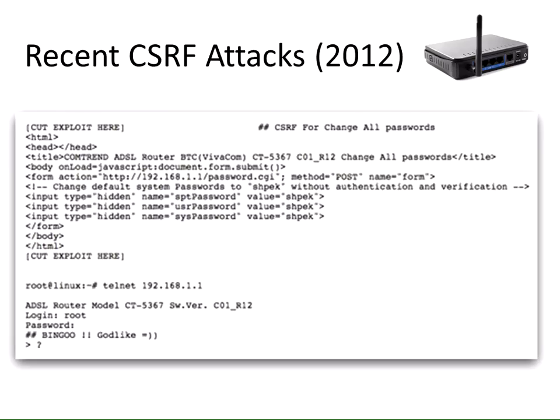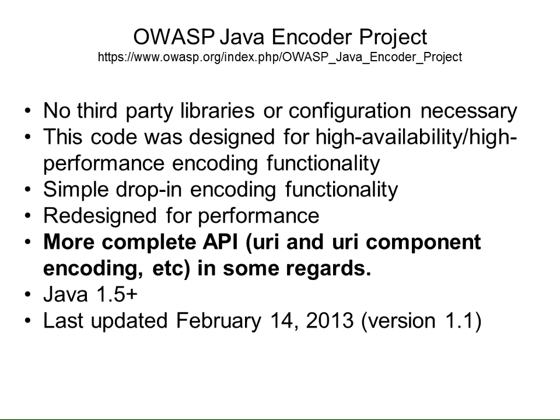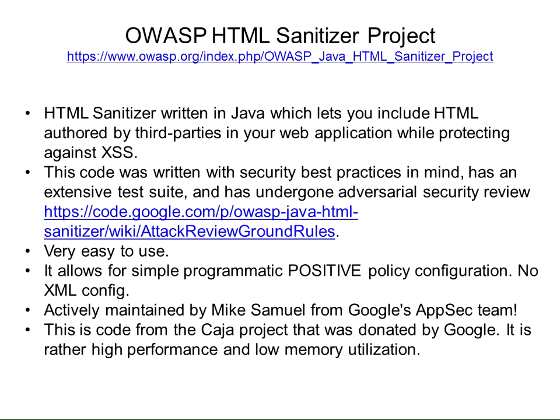Cross-site request forgery: here's a home router in Brazil getting popped because of a CSRF attack. The point is we shouldn't be coding CSRF defense anymore — we should be leveraging our framework. Struts, Spring, most PHP frameworks, Ruby on Rails — they give you CSRF defense out of the box. It's a serious attack; use it. In the cross-site scripting defense space, there's not much out there in Java, so I recommend the OWASP Java Encoder and the OWASP HTML Sanitizer. With about five libraries, I have a really industrial toolkit that my developers can use to write secure code.